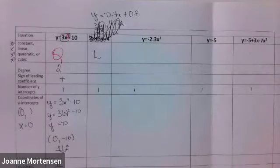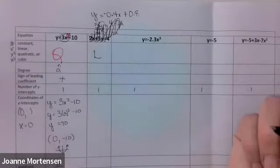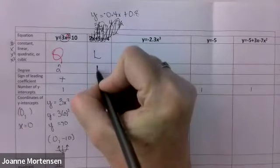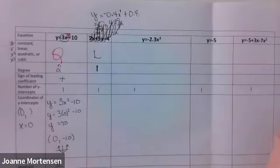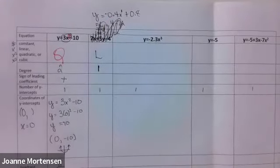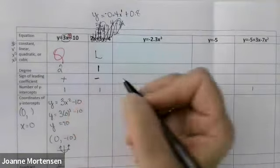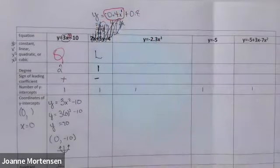What degree is this one? What's my exponent on x? There's an understood one — that pesky understood one that's all over the place. So degree is one. Sign of the leading coefficient — what's the sign on the leading term? It's negative. I'll circle that as my leading term.